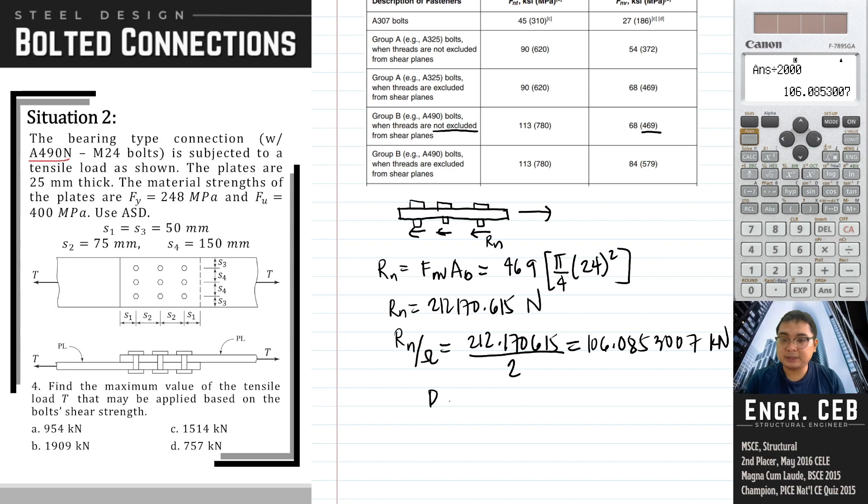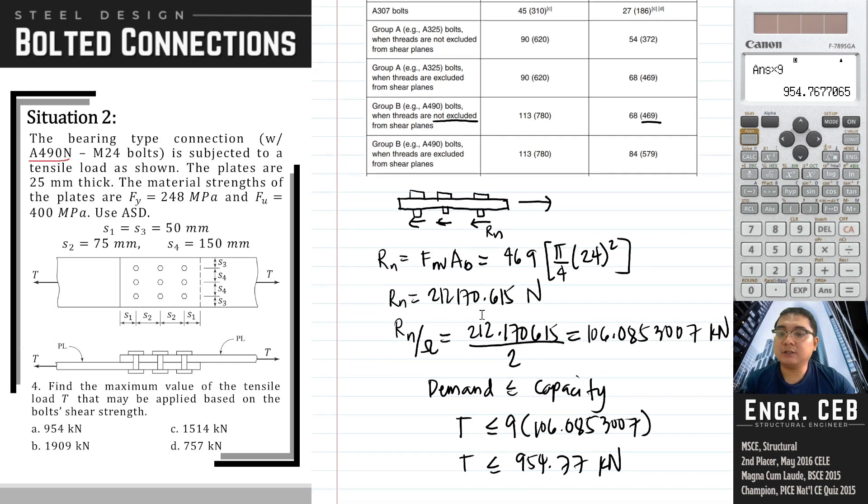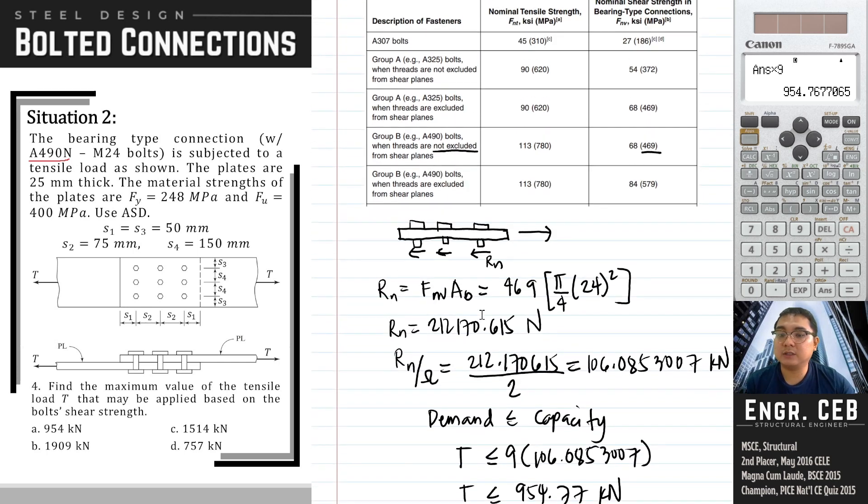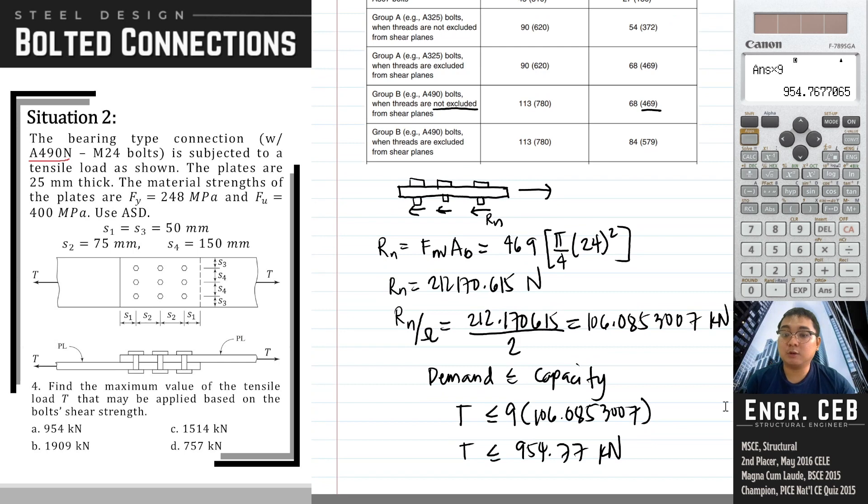Now we will compare the demand and the capacity. The demand in the plate is T, and then our capacity, we have to multiply the 106 kilonewton by 9 because all in all, we have a total of 9 bolts. That is 954.77 kilonewton. So meaning, the value of T should not be greater than 954 so that the bolts will not fail in shear. Therefore, the answer is letter A.